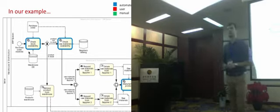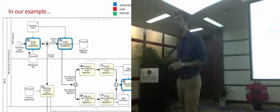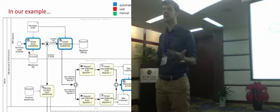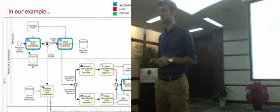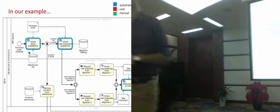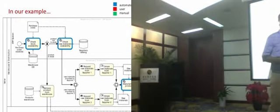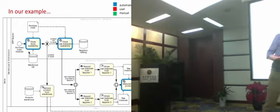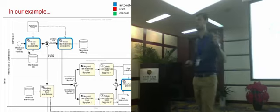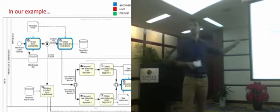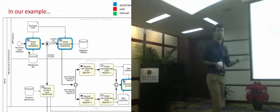Manufacture product is another example of a service task. It may sound like a manual task, but what we want to capture at the level of an executable process model is the interaction between tasks. The product could be manufactured by a manufacturing plant that exposes its functionality through a service interface, with which the BPMS communicates — so that is clearly a service task.